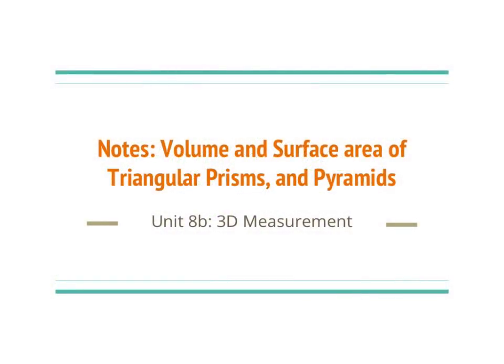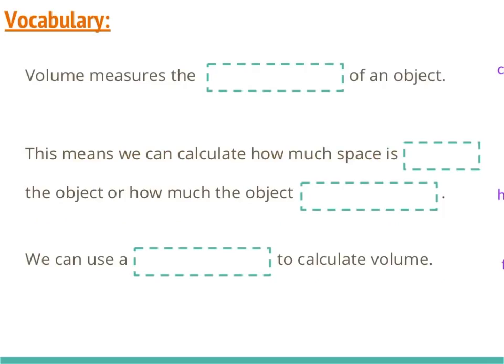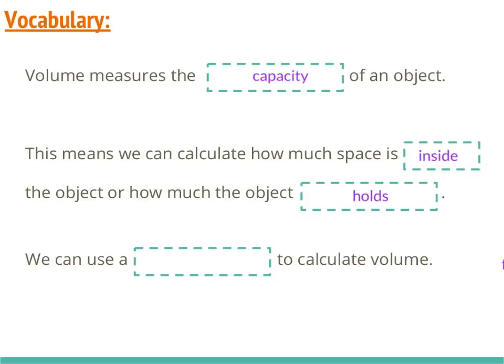Welcome back. Today we're going to be continuing talking about volume and surface area, but today we're going to be talking about triangular prisms and all types of pyramids. Let's take a look at some vocabulary. Remember that volume measures the capacity of an object — how much space is inside the object or how much the object will hold — and we can use a formula to calculate volume.